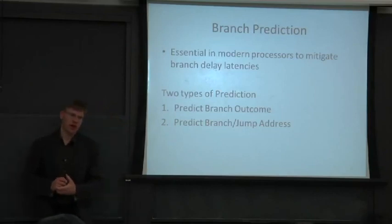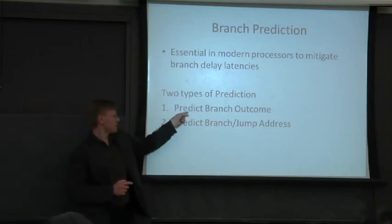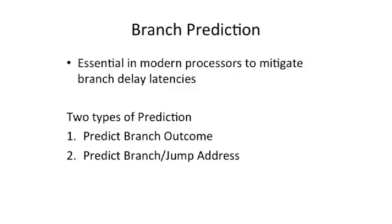So branch prediction - everyone always thinks it means just the first thing. That's not what it means. It encompasses both things. You have to predict the outcome, whether the branch is taken or not taken, and you also want to predict the target address.